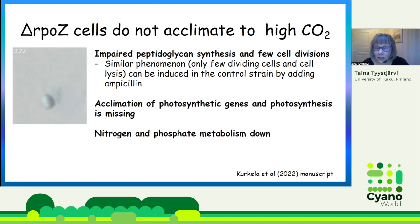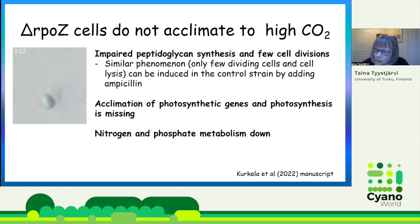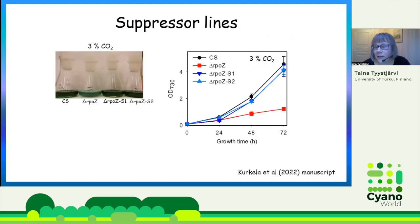Delta-RPOZ cells also have acclimation problems with the photosynthetic machinery, and nitrogen and phosphate uptake is highly downregulated. The next question is: why does this happen when the omega subunit is missing? The suppressor lines give us some answers to this question.